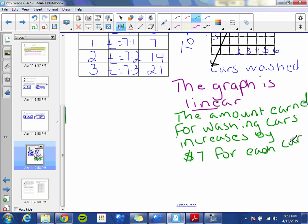You could also say the amount earned increases $7 for every car washed. You could also say for every car washed, the total amount earned increases by $7. It doesn't matter how you word it, as long as you say something about the relationship. And the key word in there is increases.